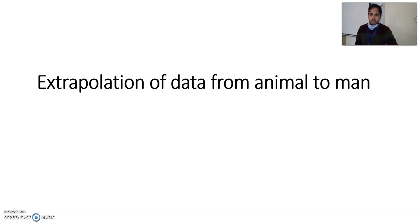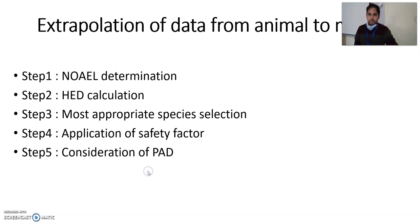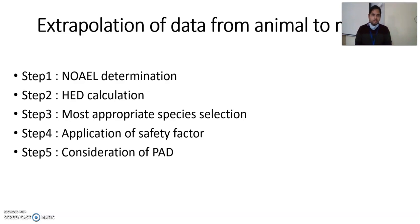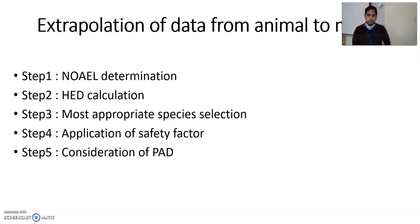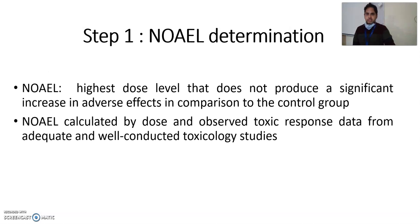As per regulatory authorities, how do we convert animal dose to human dose? There are basically five steps. First, you have to determine the NOEL — no observed adverse effect level. Second, calculate the HED — human equivalent dose. Step three, select the most appropriate species. Step four, apply the safety factor. The final step is to consider the pharmacological active dose. These are the five steps by which we convert animal dose into human dose as per US FDA guidelines.